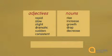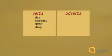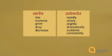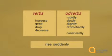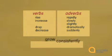There's another way of describing these changes — we can use verbs and adverbs. Many nouns like 'the rise,' 'the increase,' 'the growth' can be used as verbs: to rise, to increase, to grow, to drop, to decrease. And many adjectives can become adverbs: rapidly, slowly, slightly, dramatically, suddenly, consistently. By using these new words, we can describe data using verbs and adverbs. We can say: to rise suddenly, to decrease slightly, to drop suddenly, to grow consistently.